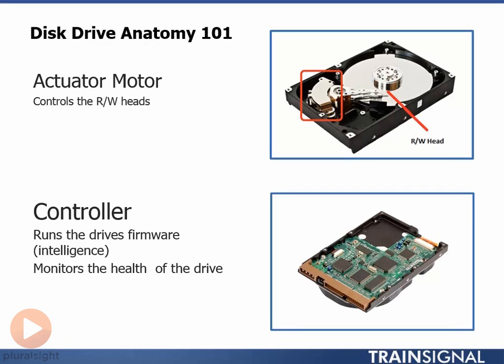The LBA map is a simplified abstraction of the complexities of the disk drive. For example, instead of exposing all of the physical details — such as the number of read-write heads or the number and size of each of the platter surfaces — the drive controller abstracts all of those complexities into the LBA map, which is effectively just a simple virtualized address space, let's say from 00 through to 999, that anybody can use without having to understand the internal complexities of the disk drive.